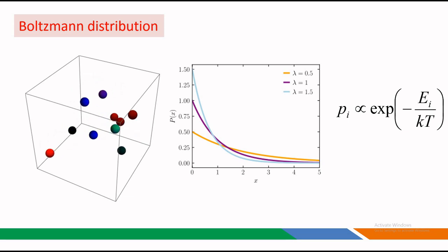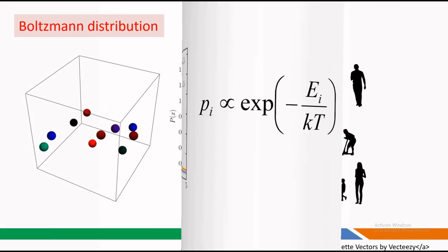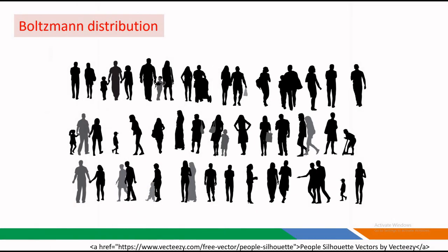Think of it like this: imagine a party with people of different ages. The energy levels are like the ages, and the probability is like the number of people at each age. The older you get, the less likely you are to find someone at that age.